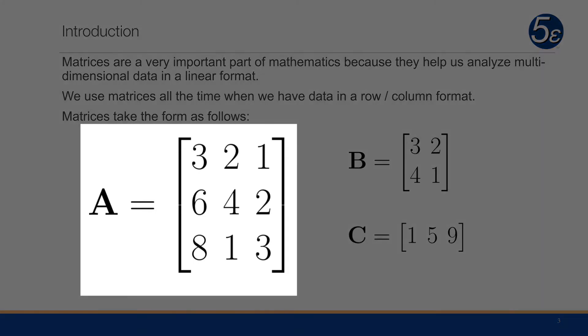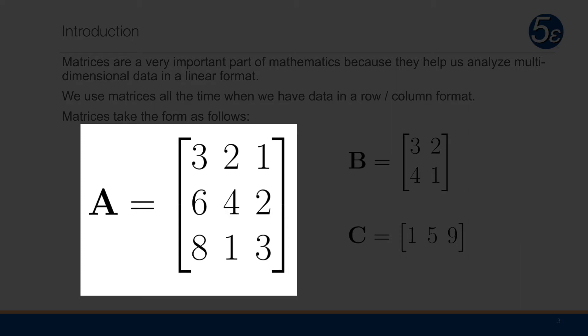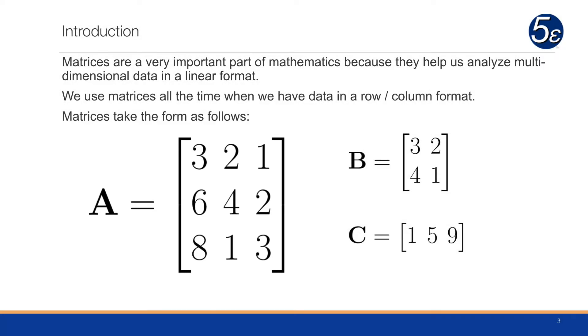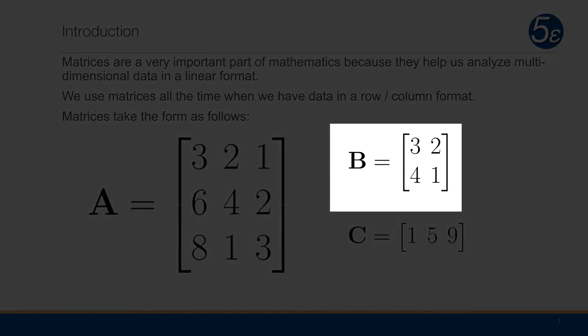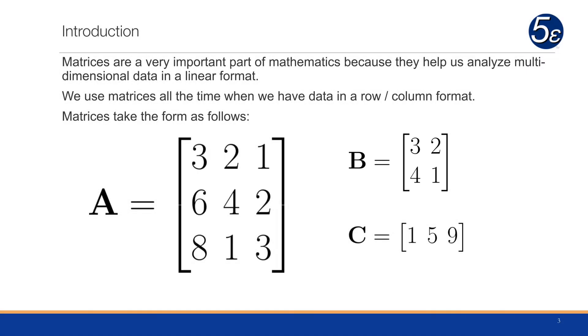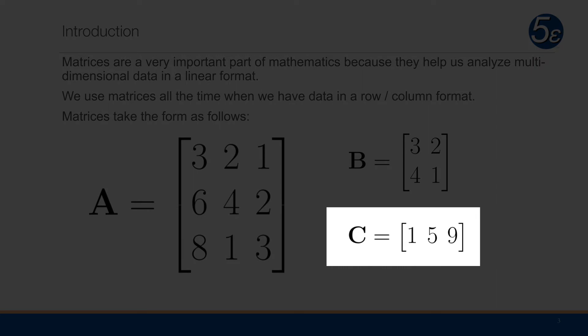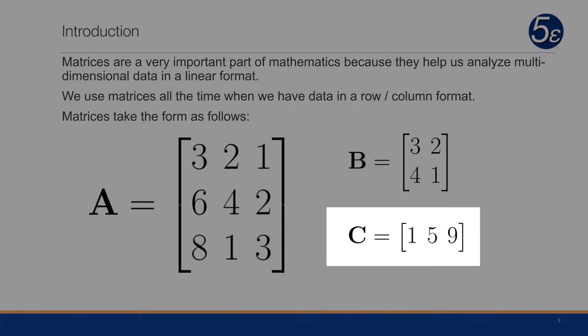When we use matrices, we have this row column format. Here we see three matrices. Matrix A equals 3 2 1, 6 4 2, 8 1 3 going across horizontally. Matrix B is 3 2, 4 1, and C is 1 5 9. This is a one row with three columns.